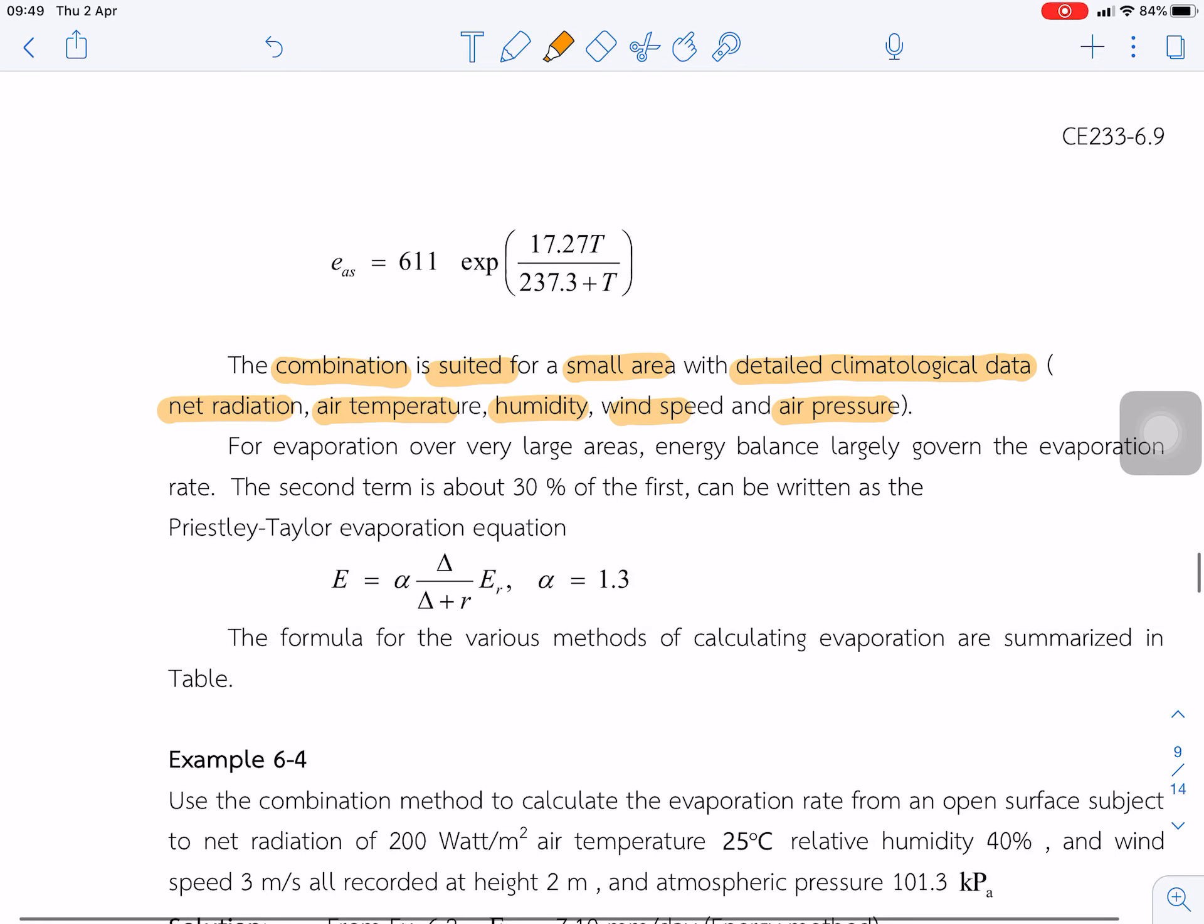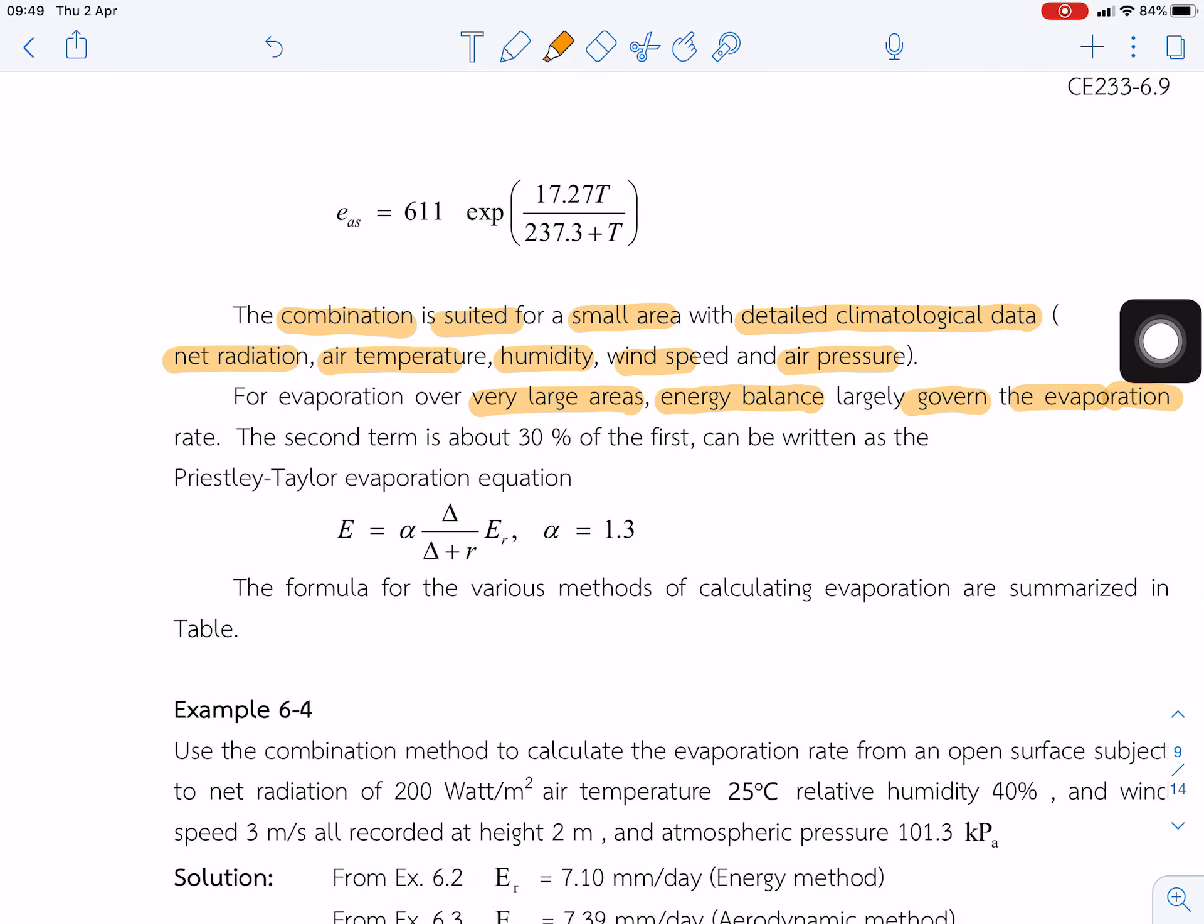But for a large area, there is no data. And we find that the energy balance largely governs evaporation. The second term, evaporation from aerodynamics, is about 30% of the first term. So we can rearrange this equation as the Priestley-Taylor evaporation equation.